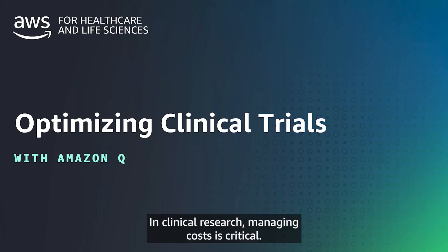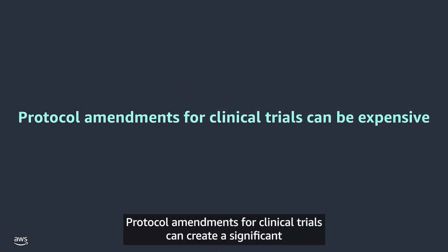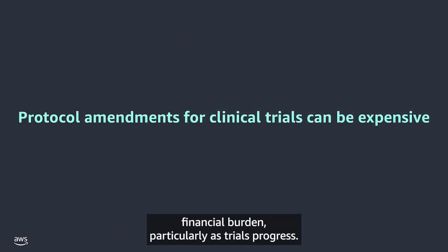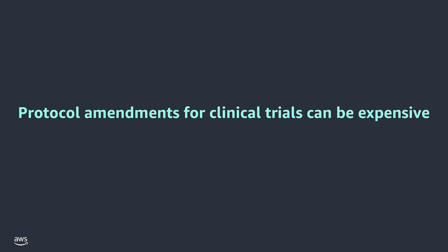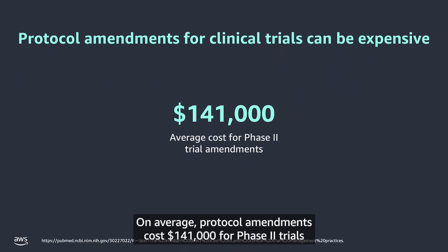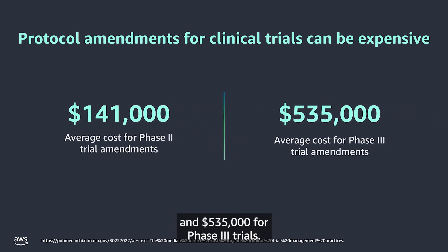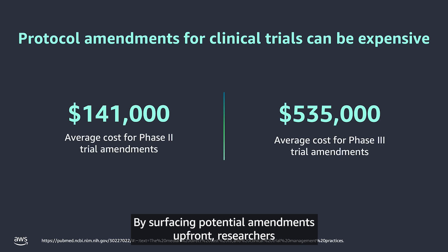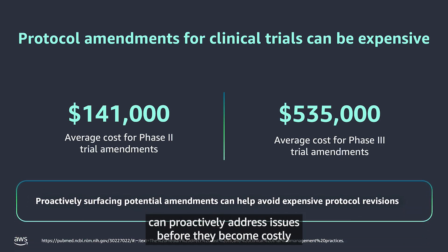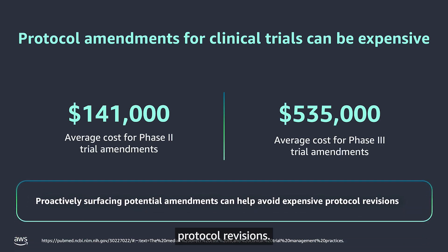In clinical research, managing costs is critical. Protocol amendments for clinical trials can create a significant financial burden, particularly as trials progress. On average, protocol amendments cost $141,000 for Phase II trials and $535,000 for Phase III trials. By surfacing potential amendments up front, researchers can proactively address issues before they become costly protocol revisions.